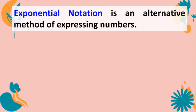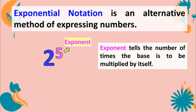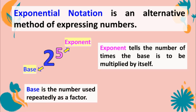What is exponential notation? Exponential notation is an alternative method of expressing numbers. For example, 2 to the 5th power — the 5 is called the exponent. It is the small number found at the upper right corner. The exponent tells the number of times the base is to be multiplied by itself. The 2 is called the base. The base is the large number at the bottom left of the exponent. Base is the number used repeatedly as a factor.